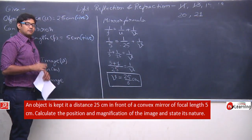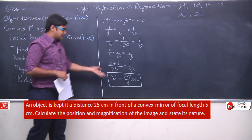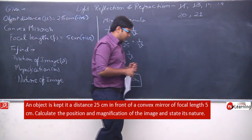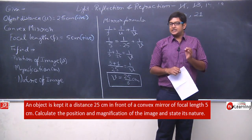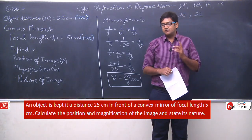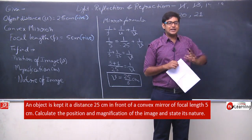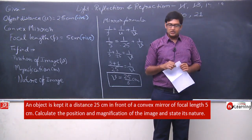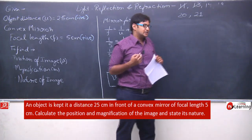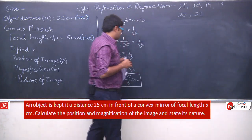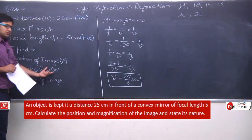v = 25/6 centimeters, and it is positive. By default we had assumed positive, and solving confirms it is positive. This means the image is a virtual image — it forms on the right-hand side of the mirror, since image distance is positive.